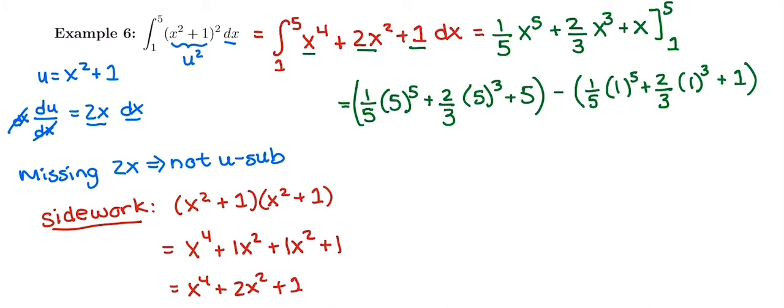So I would plug in just my upper bound, so just plugging in this term with the 5s. So 1 5th of 5 to the 5th plus 2 3rds of 5 to the 3rd plus 5s. You might need to put those fractions in a parenthesis for your calculator to give you 7, 13, 0.3 repeating, minus when you plug in 1 to the integral or the antiderivative, you get 1.86 repeating. And so subtracting the 2, the net area under this curve is 711.46 repeating.